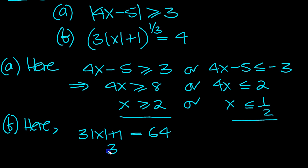So that tells us then that 3 modulus of x is equal to, move the 1 over to minus 1. 64 take 1 is 63, then move the 3 from times to divide. 63 over 3 is 21.